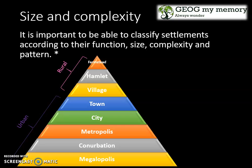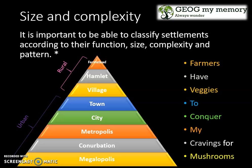One of the most challenging things is to remember this hierarchy, so here's a little sentence to help you out: 'Farmers have veggies to conquer my cravings for mushrooms.' Farmers for farmstead, have for hamlet, veggies for village, two for town, conquer for city, my for metropolis, cravings for conurbation, and mushrooms for megalopolis. I hope that helps!